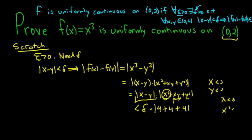Because x is less than 2, so x squared is less than 4. And xy is less than 4 as well, right? They're all less than 2. So 4 plus 4 plus 4 is 12. So this is equal to 12 delta.